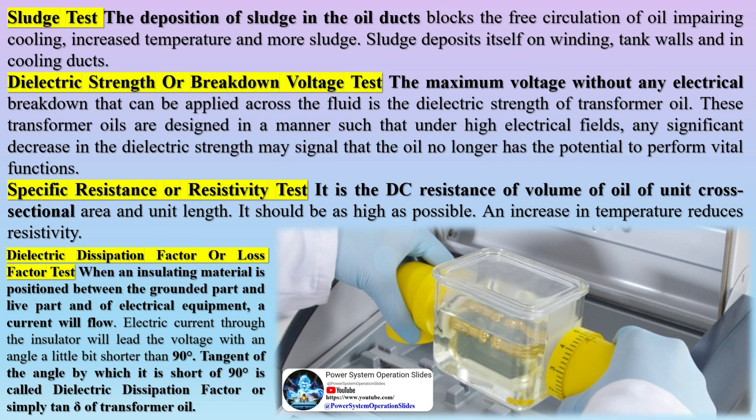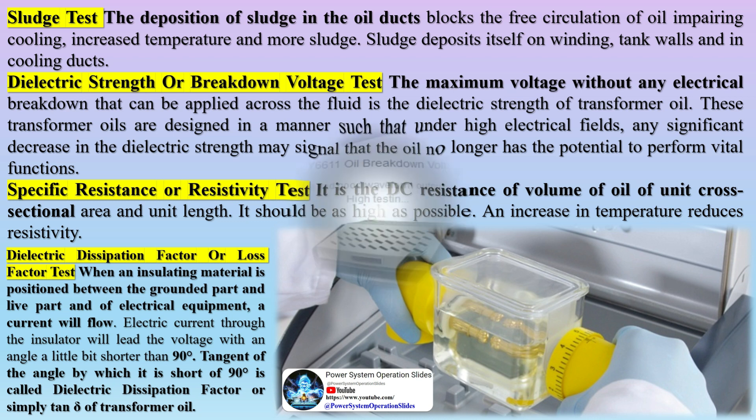Dielectric dissipation factor or loss factor test: when an insulating material is positioned between the grounded part and live part of electrical equipment, a current will flow. The electric current through the insulator will lead the voltage with an angle slightly less than 90 degrees. The tangent of the angle by which it is short of 90 degrees is called the dielectric dissipation factor, or simply tan delta of transformer oil.